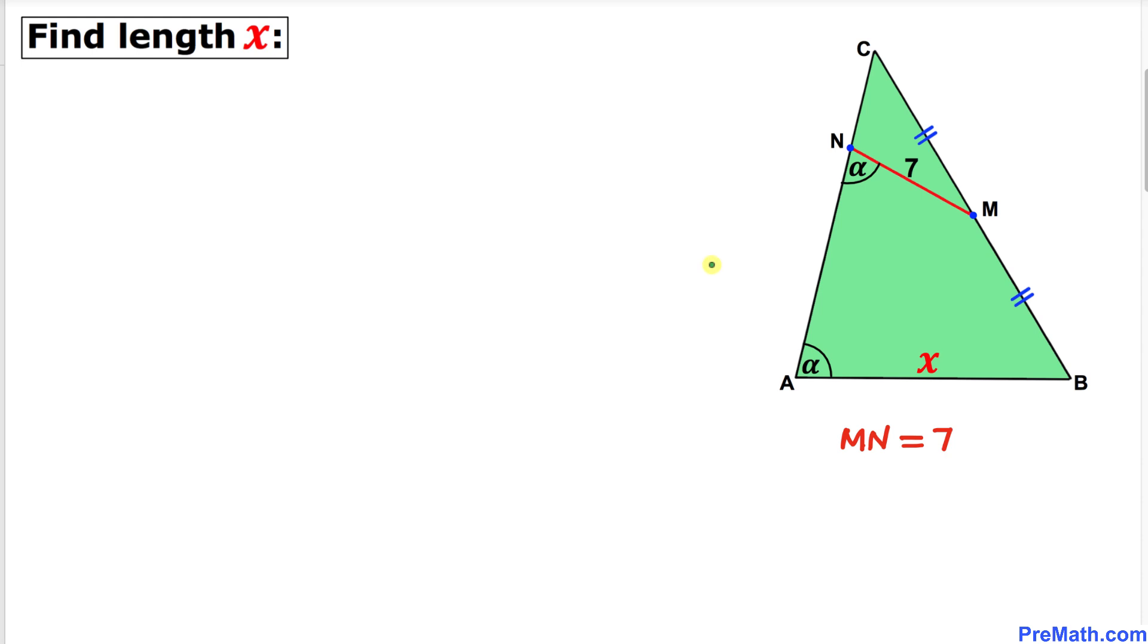Welcome to PreMath. In this video tutorial, we have triangle ABC such that M is the midpoint of side length BC. This line segment MN is 7 units, and moreover, this angle A is alpha.